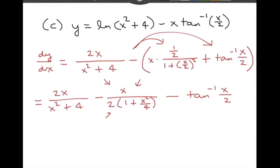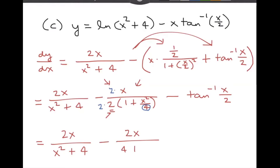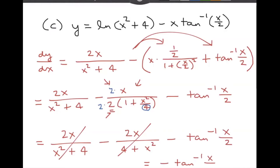What is this going to turn into? I'm going to multiply the top and the bottom by another 2 because I'd really like this to be a 4, so I can knock out that 4. We have 2x over x squared plus 4, minus 2x — distributing the 4 gives us 4 plus x squared. The 2x terms cancel out, and the derivative of that nasty-looking function is just negative inverse tangent of x over 2. It's too bad we couldn't also get rid of the negative, but that's okay.